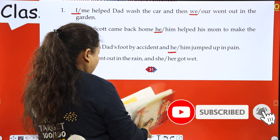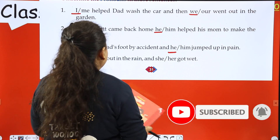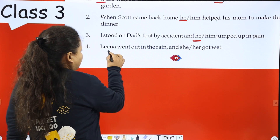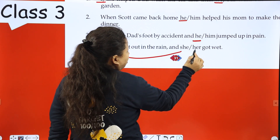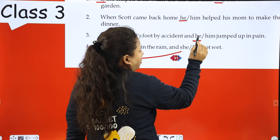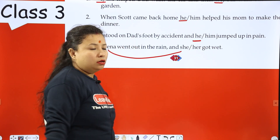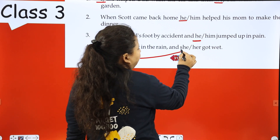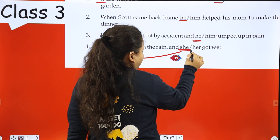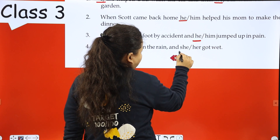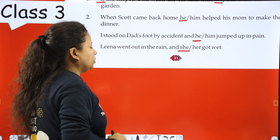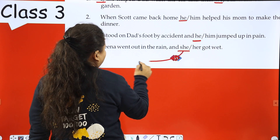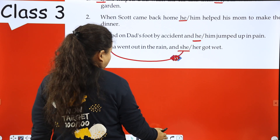Next sentence: 'Lena went out in the rain.' Lena is a girl, so we ask: 'she or her got wet?' — 'Her got wet' is wrong. 'She got wet' is correct. So 'she' is right. We use 'she' for Lena because Lena is a girl.